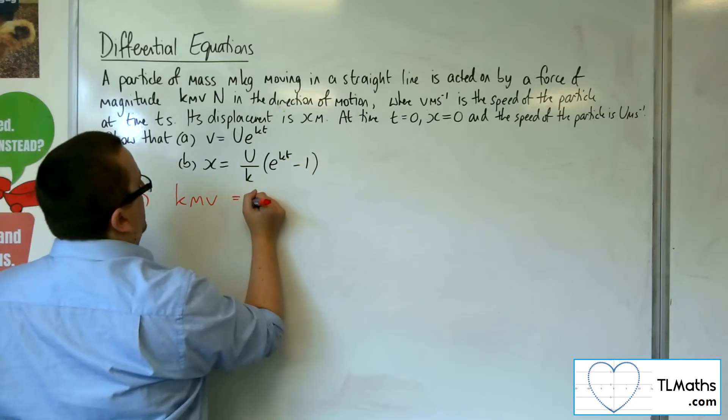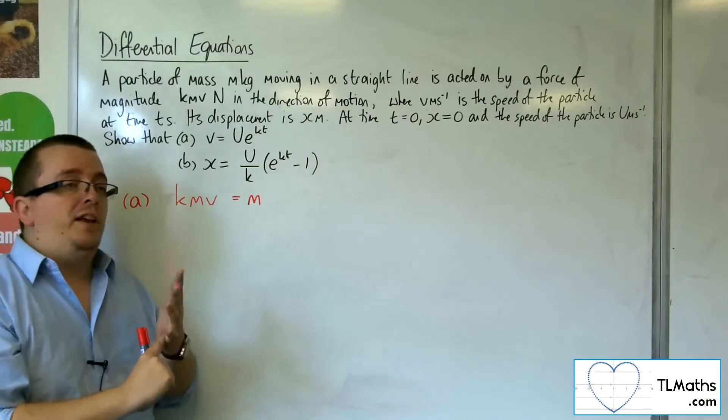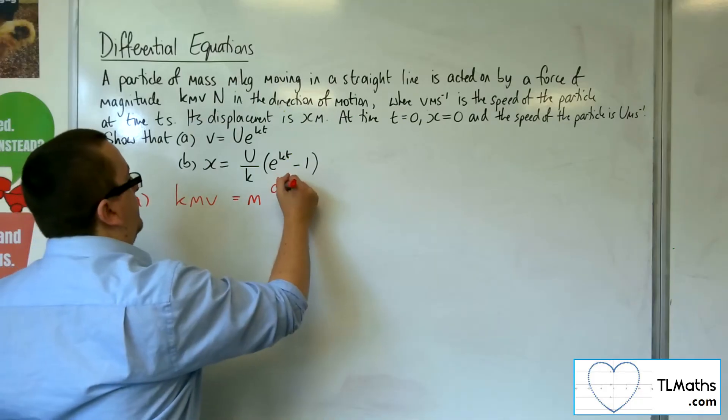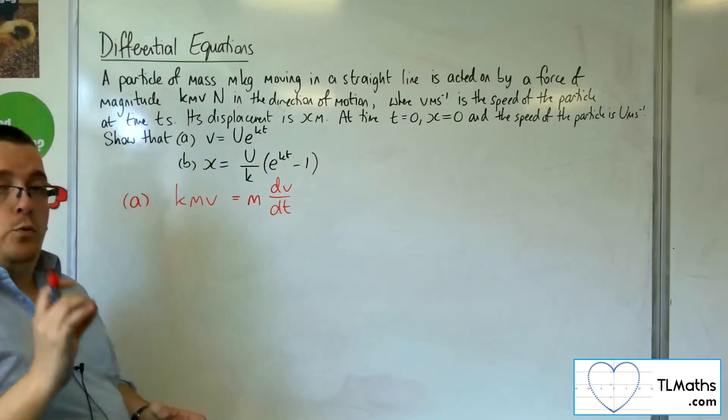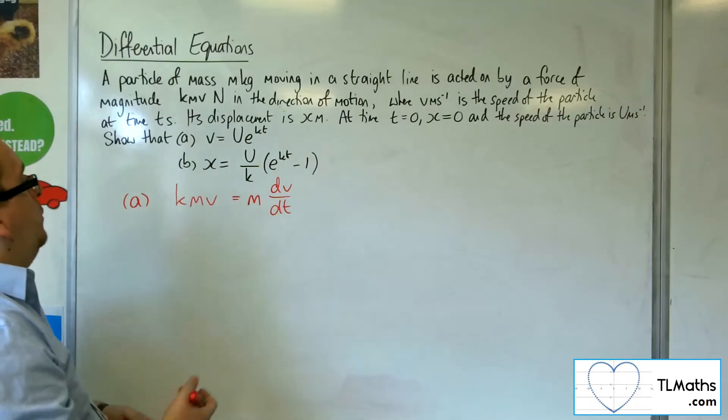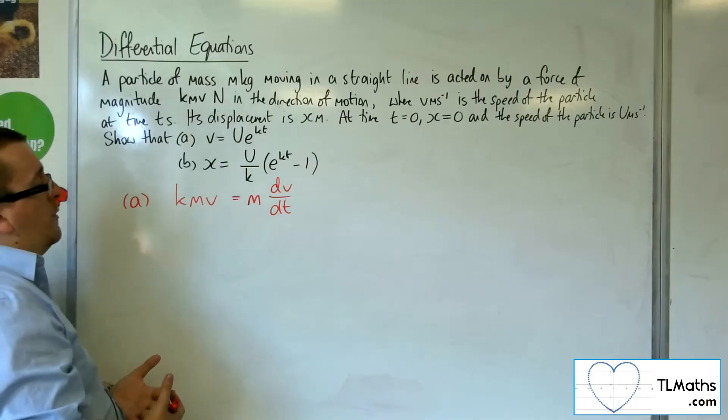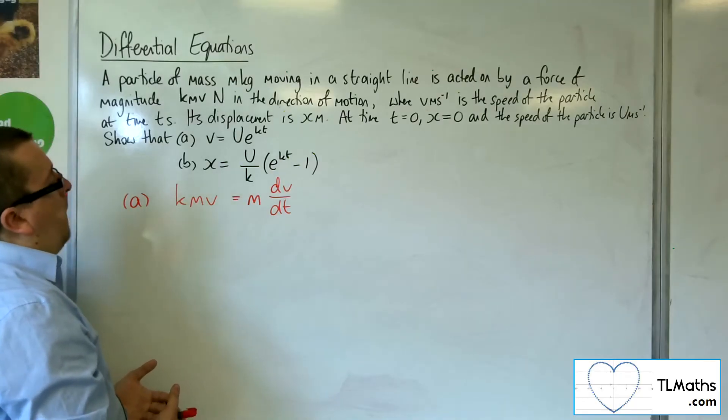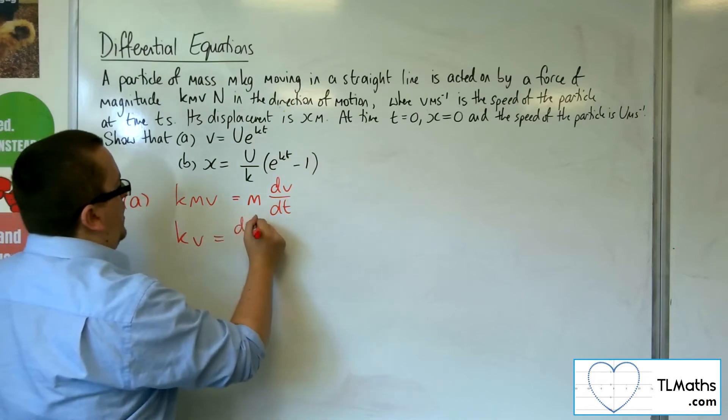So that's equal to the mass times the acceleration, and the acceleration is the change of velocity over time, dv by dt. With that in mind, we can cancel the m's from both sides, because m's not going to be zero here. The particle's not going to be massless. So we get kv equals dv by dt.